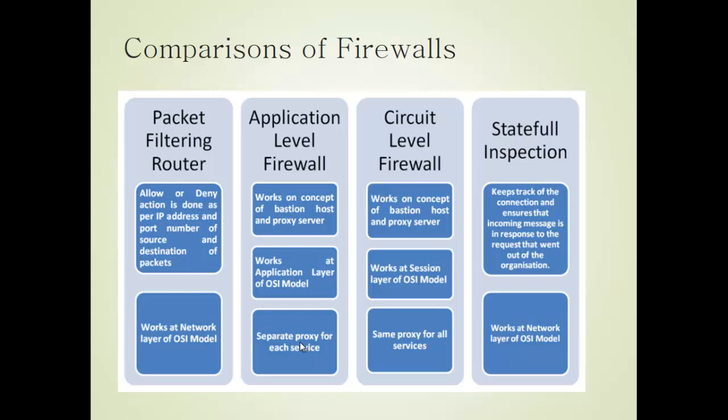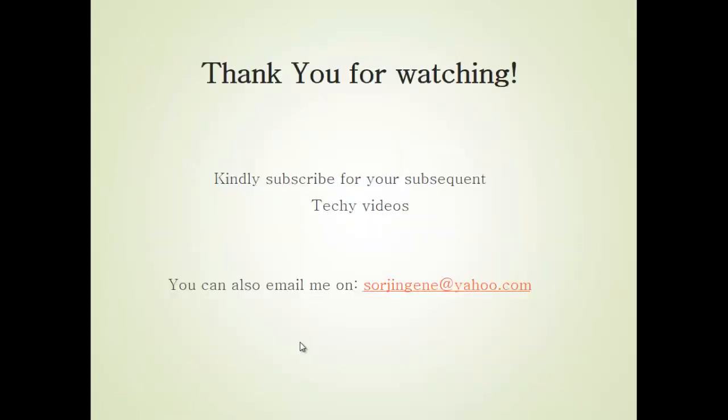As a summary, there is a comparison of the different types of firewall — packet filtering, application level, circuit level, and stateful inspection — which you can pause to read. Generally speaking, stateful inspection is considered one of the most secure. In the telecom industry today there are different types such as the Gi firewall, Gp firewall, charging firewall, and O&M firewall, depending on how the organization has designed its network. Thank you for watching — I hope this video has been informative. Kindly subscribe for subsequent tech videos.